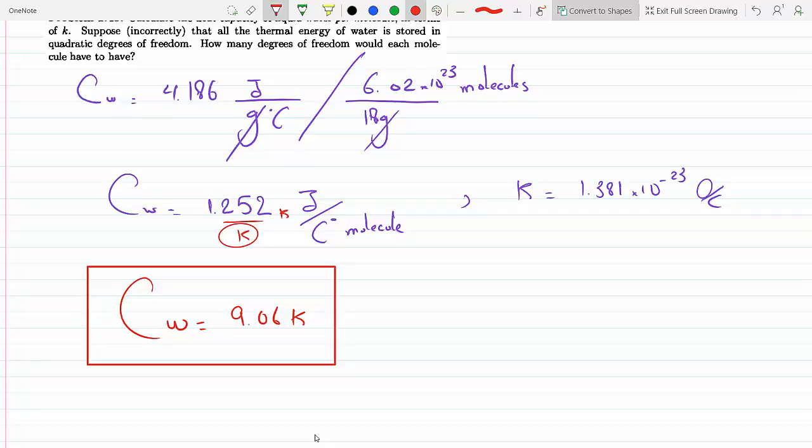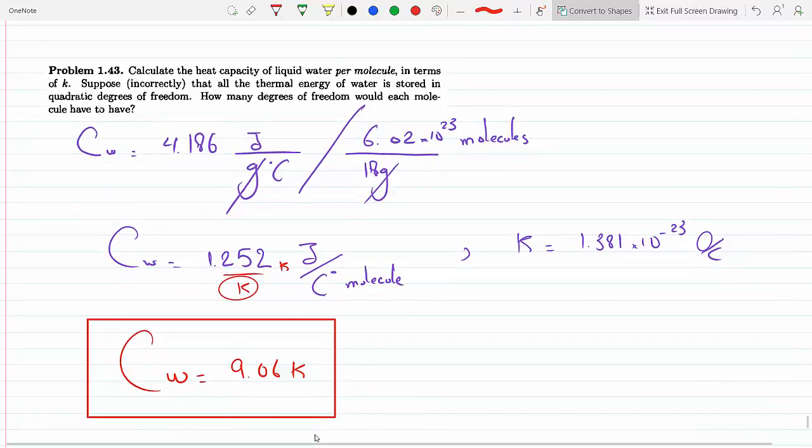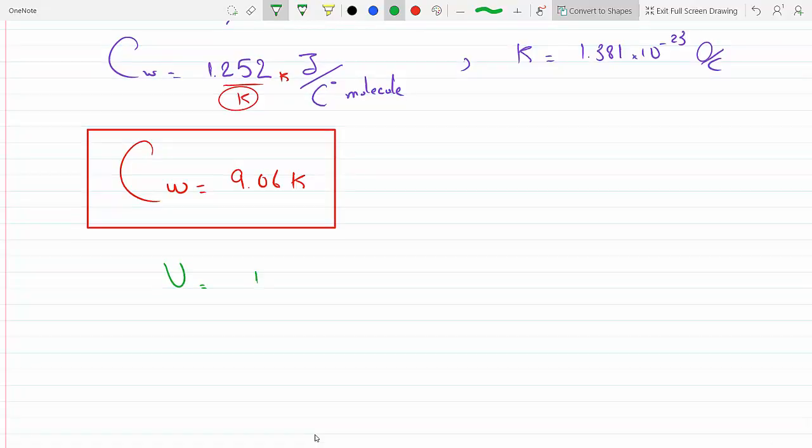Now let's get the degrees of freedom. We assume that all the thermal energy is stored in quadratic degrees of freedom. How many quadratic degrees of freedom do we need? We know that U equals one half nFKT, and we know that at constant volume, C_w is dU over dT, and so this would be one half nF K.